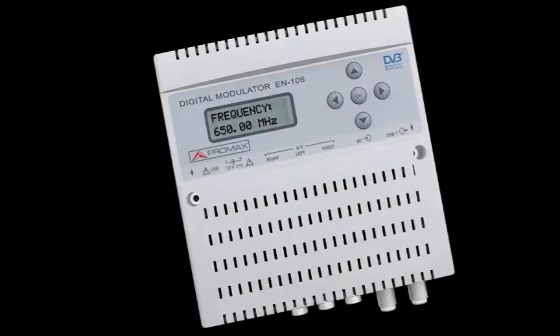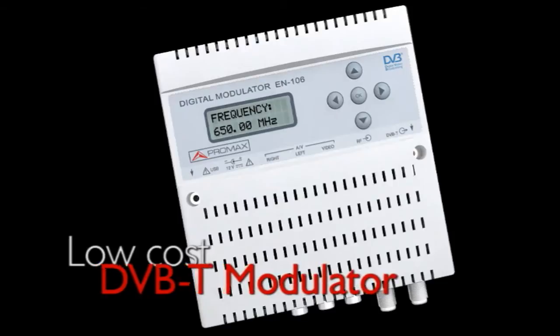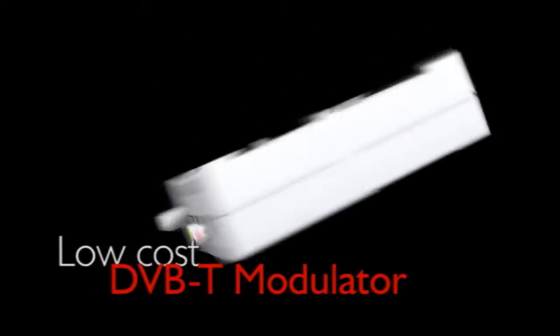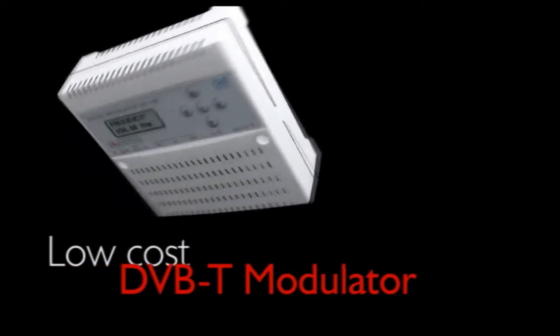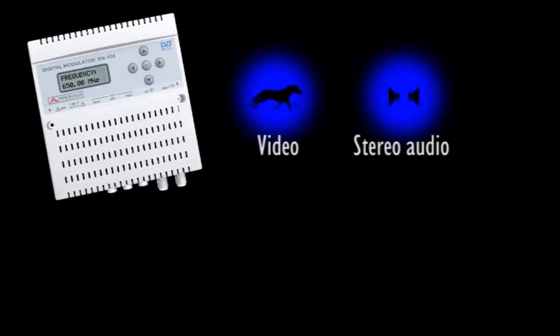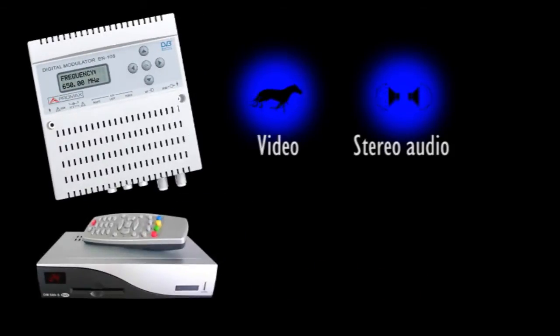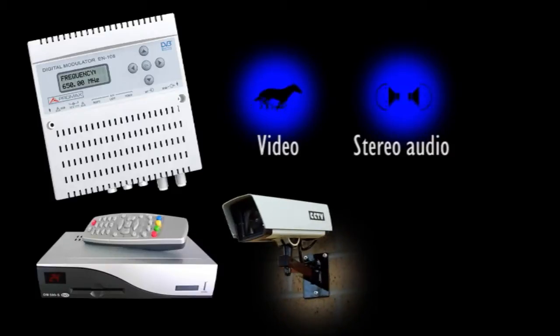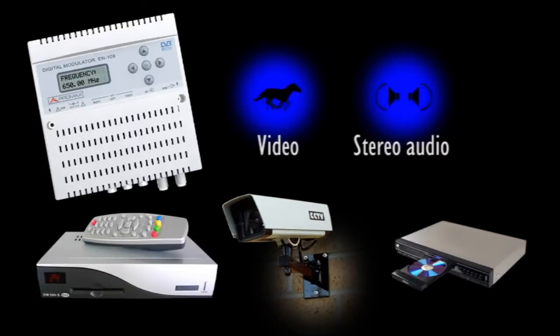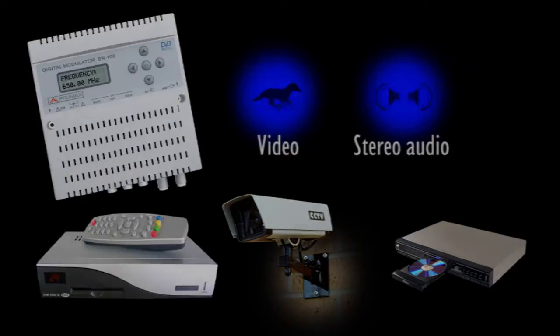The EN106 is a low-cost, agile, indoor DVB-T modulator that sends video and stereo audio signals from any composite video source, TV satellite receiver, anti-burglar CCTV cameras, or video players to your antenna distribution system.